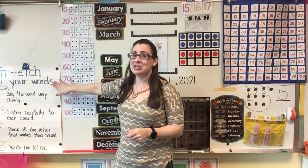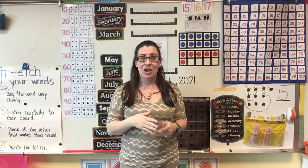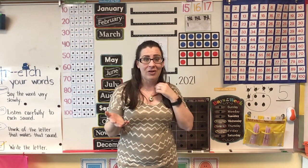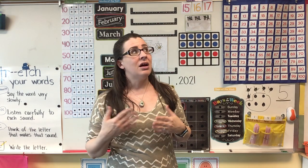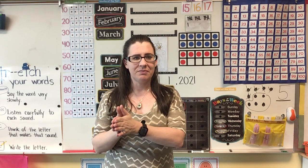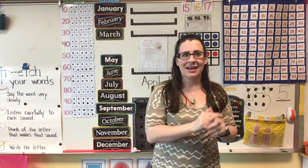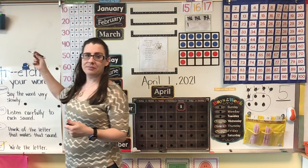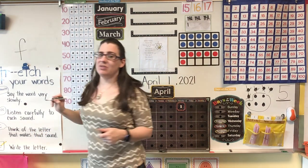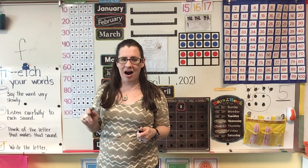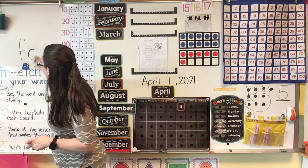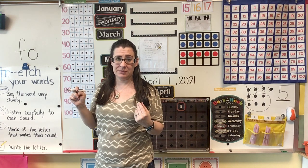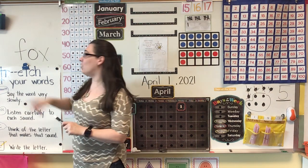Another thing that we are working on this week is stretching out our CVC words and spelling them. You have already learned how to make all the sounds in different CVC words by using your choppers. For example, if I said tell me all the sounds in the word fox — F, aw, X. Now we're going to take those sounds and write them. The first sound in fox was F, so what letter do we need to write? F, very good. The next sound in fox was aw — what letter says aw? O, so I'm going to write an O. And the last sound in fox, what was it? X. What letter makes the X sound? X. Very good. And now we have the word fox.